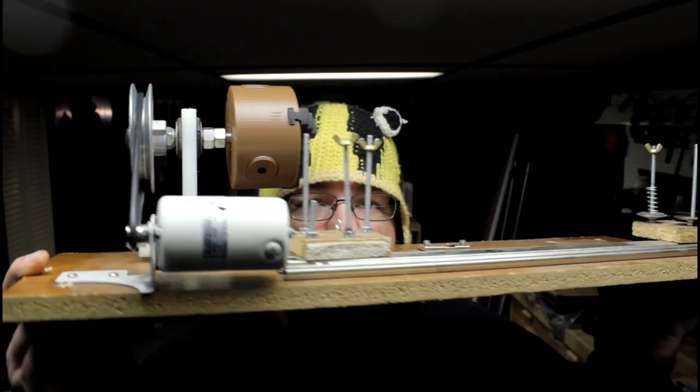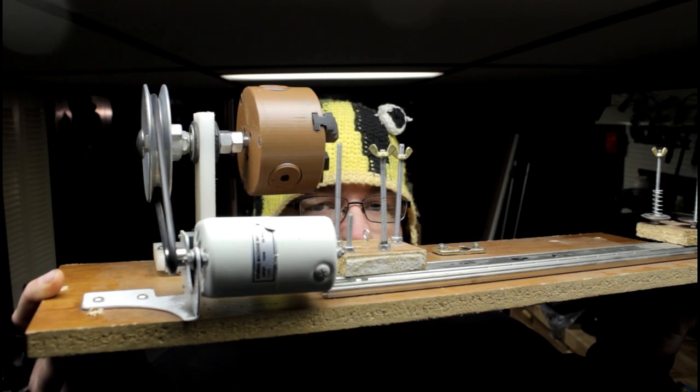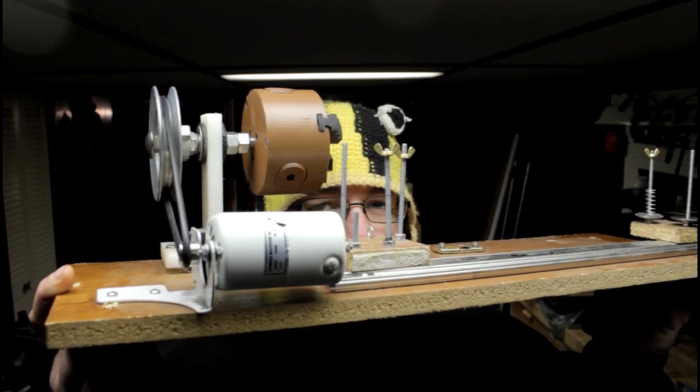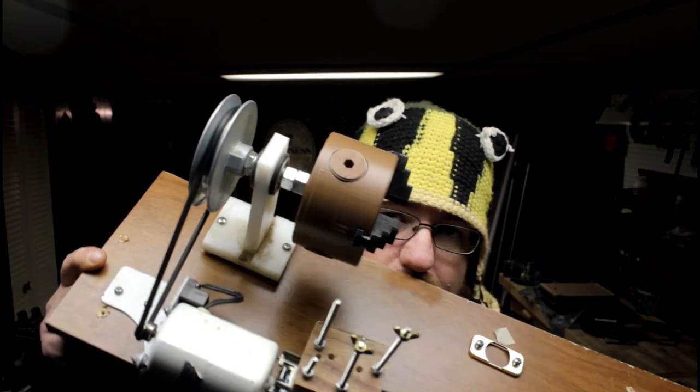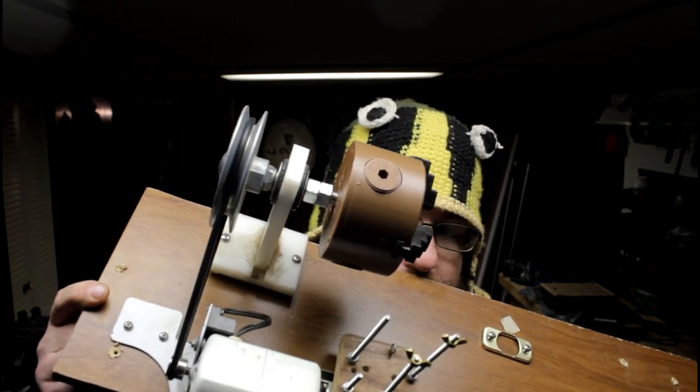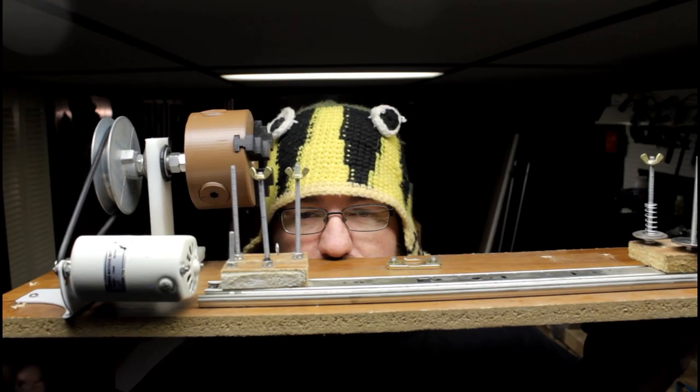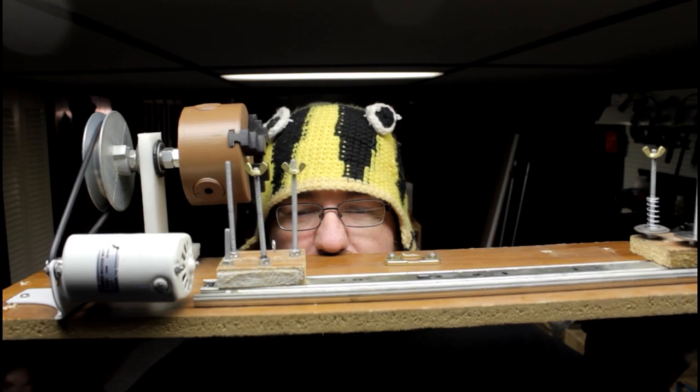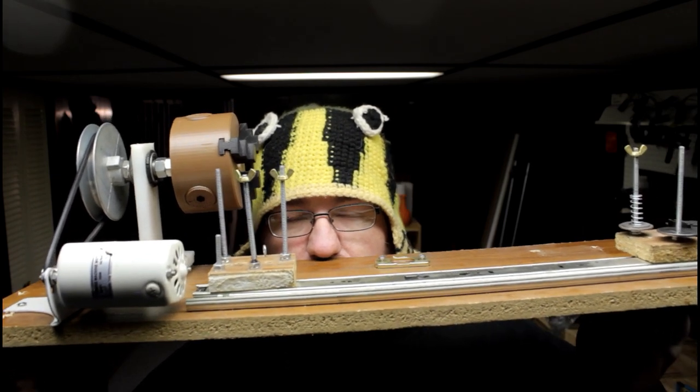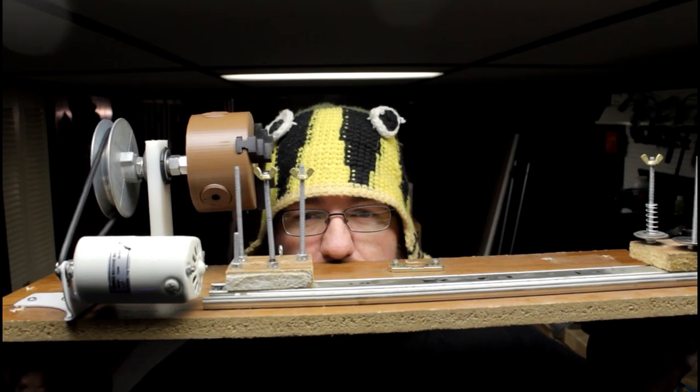This right here is a sewing machine motor from a sewing machine so it has a foot pedal. And then it's just hooked up with a series of different pulleys and o-rings. But it's just to demonstrate that 3D printing can not only help you build the things you want to build but also help you build the tools to build those things.